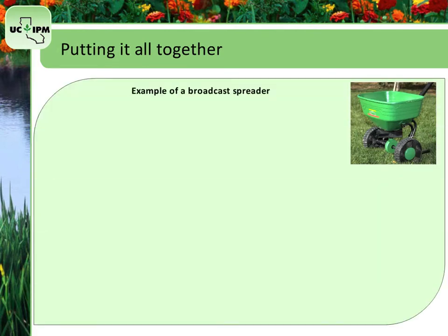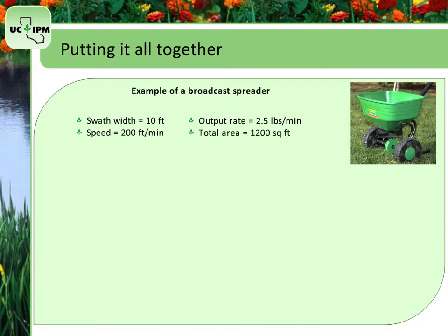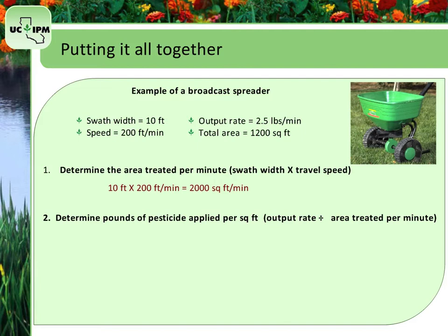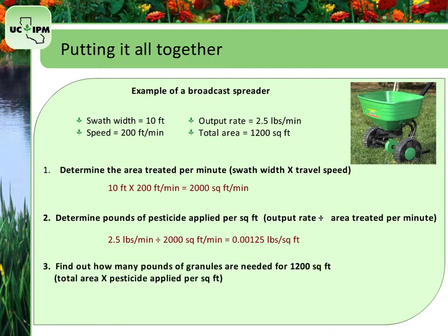Let's try an example. Say you are using a broadcast spreader with a swath width of 10 feet and going 200 feet per minute. Your output rate is 2.5 pounds per minute, and the total area you are applying granules to is 1,200 square feet. To find out how many pounds of granules you will apply for proper coverage, first determine the area treated per minute by multiplying the swath width by the travel speed: 10 feet multiplied by 200 feet per minute gives you 2,000 square feet per minute. Then, to determine the pounds of pesticide applied per square foot, divide the output rate by the area covered: 2.5 pounds per minute divided by 2,000 square feet per minute equals 0.00125 pounds per square foot. Finally, find out how many pounds are needed for 1,200 square feet: multiply 1,200 by 0.00125 pounds per square foot to get 1.5 pounds.